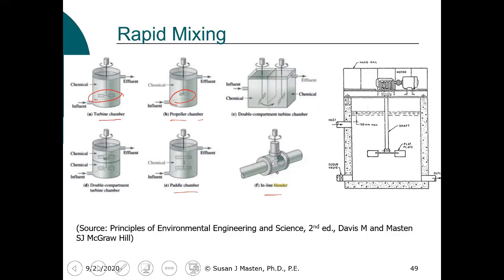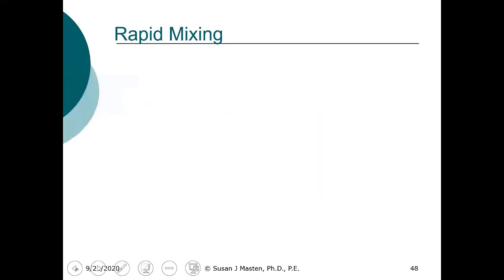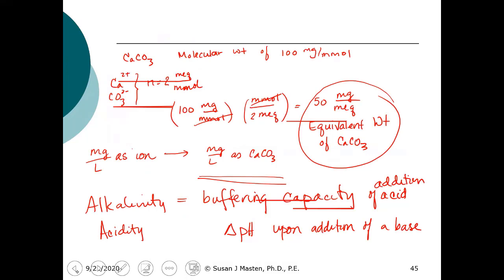A student asked for clarification on alkalinity and acidity. Alkalinity is the ability of a water to resist a change in pH upon the addition of an acid. Acidity is the ability of a water to resist a change in pH upon the addition of a base. With alkalinity you're looking at a decrease in pH; with acidity you're looking at an increase. In chemistry they use the term buffering capacity; in environmental engineering we use alkalinity and acidity.